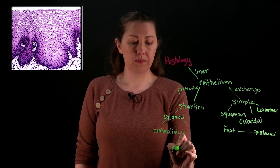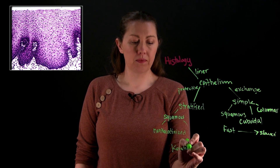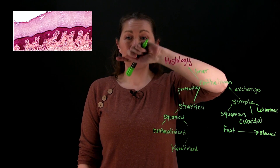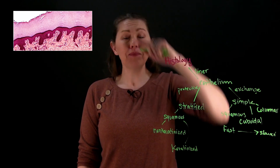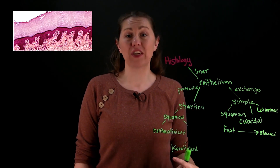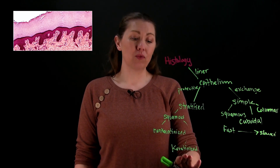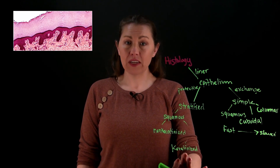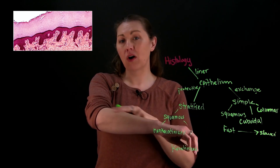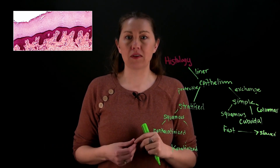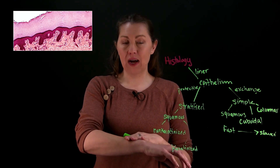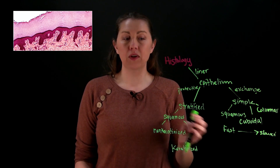The keratinized option has the top layer dead — no nuclei visible. The process is called keratinization: cells are stuffed full of a tough protein called keratin, which makes it water resistant. This is what we see in our skin. Those top dead layers shed off constantly — most of the dust in your house is that. So keratinized: dead at the top, no nuclei, filled with keratin.